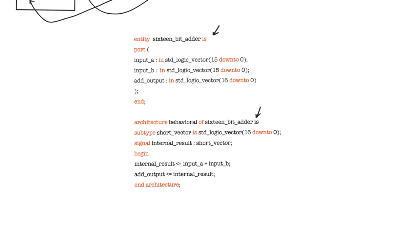Here we have an architecture, and the name of the architecture is 'behavioral'. It is an architecture of an entity whose name is '16-bit adder'. Between the word 'is' and the word 'begin', we have the architecture declarations part — this is where we declare internal signals, components, and constants we will be using. Then comes 'begin', and between 'begin' and 'end architecture' we have the actual implementation — the real hardware.